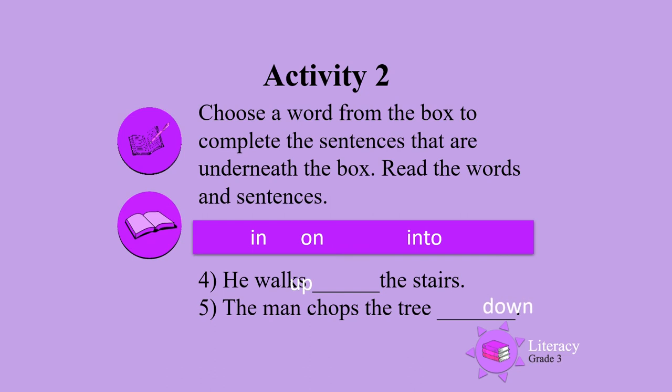Right. The fourth sentence — choose a word from the box to complete the sentence. He walks the stairs. You should have written: he walks up the stairs.